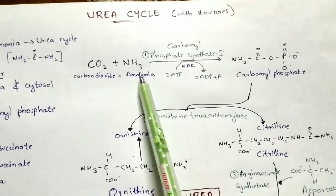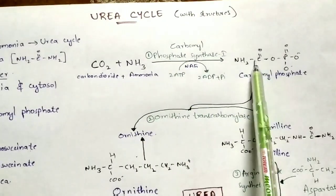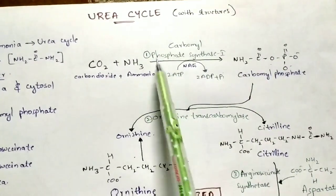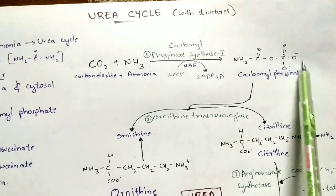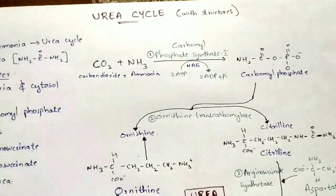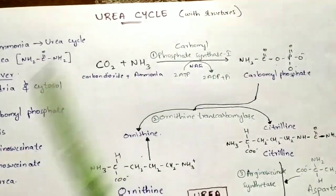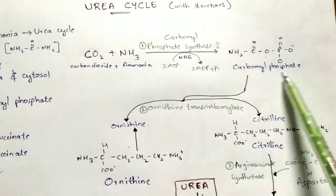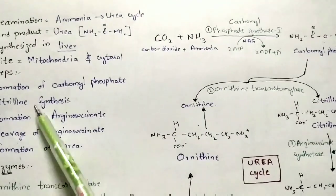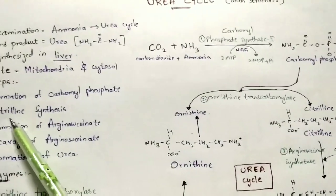In the carbamyl phosphate structure, the NH2 group is formed from ammonia and one hydrogen forms a bond; carbon dioxide contributes the carbon. One inorganic phosphate group is liberated from ATP and utilized in this reaction. This completes the first step — formation of carbamyl phosphate.